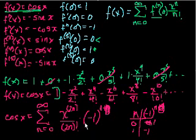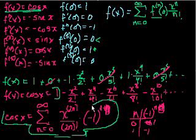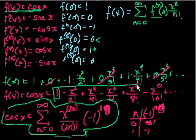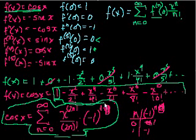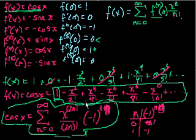So pretty neat — we just figured out another way to represent cosine of x. And it might be looking a little interesting that this representation kind of resembles part of the representation of e to the x. Well, e to the x had the odd exponent terms, and it didn't switch signs. But other than that, they're pretty much the same. So in the next video, we'll do sine of x, and then we'll try to put it all together. I'll see you soon.